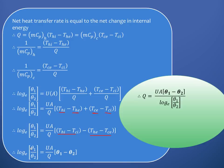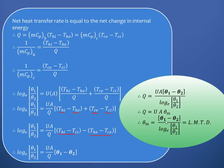Rearranging, Q = U·A · (θ₁ − θ₂) / ln(θ₁/θ₂). The term (θ₁ − θ₂) / ln(θ₁/θ₂) is defined as the Log Mean Temperature Difference, θ_m (LMTD). Therefore, LMTD = (θ₁ − θ₂) / ln(θ₁/θ₂), and it represents the effective temperature difference maintained across the length of the heat exchanger that gives the same rate of heat transfer as in the actual case.